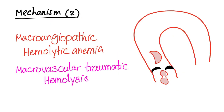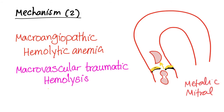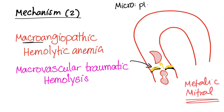Now for the second mechanism. Instead of platelets and a fibrin meshwork, you have a valve — such as the aortic valve — that is abnormal. The red blood cell cannot pass through because the valve is calcific and abnormal, so it gets sheared into a schistocyte. It doesn't have to be the aortic valve — it could be the mitral valve, or a metallic replacement valve. We call this macroangiopathic hemolytic anemia, or macrovascular traumatic hemolysis. It's "macro" because a valve is something large, while the previous scenario was "micro" because platelets are so tiny.